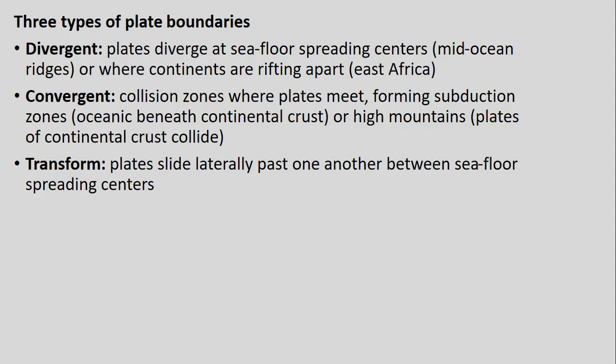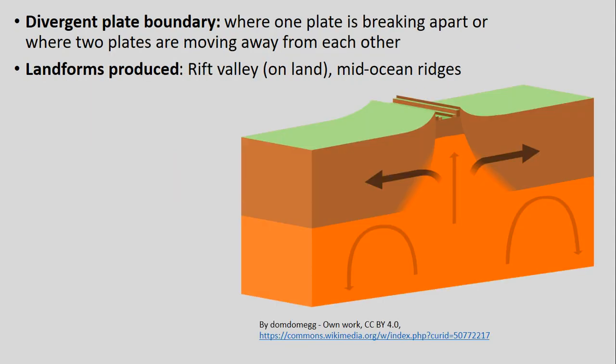When thinking about plate boundaries, there are three main types. There are divergent boundaries, where plates are moving apart from each other. There are convergent boundaries, where plates are running into each other in opposite directions. And there are transform faults, where plates are sliding past each other laterally.